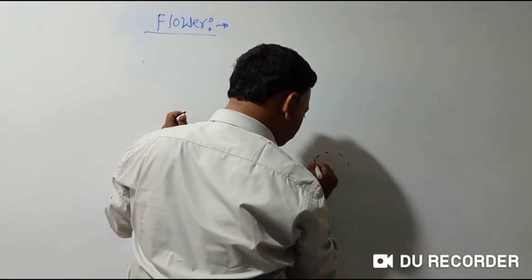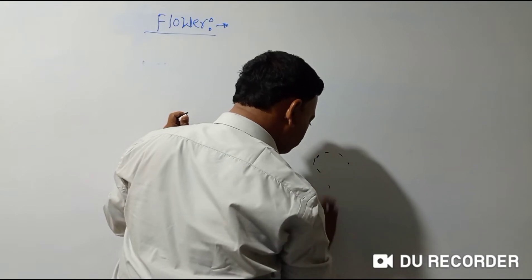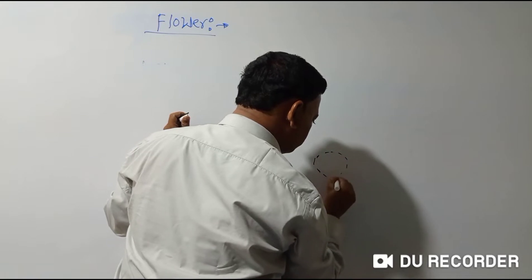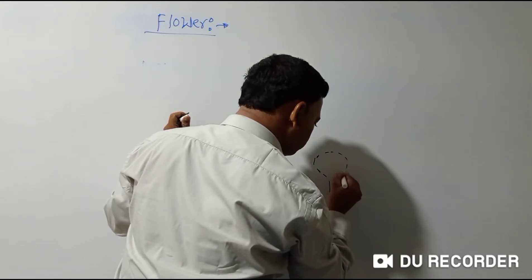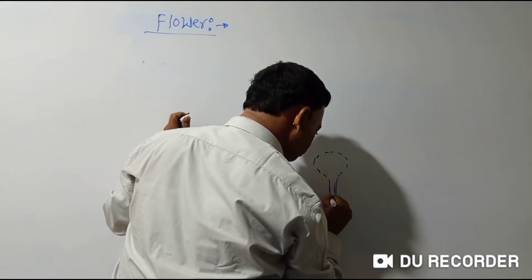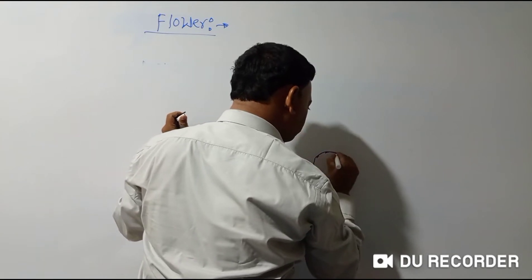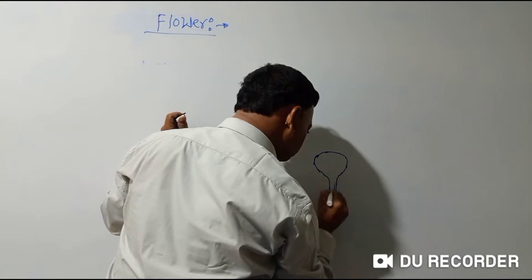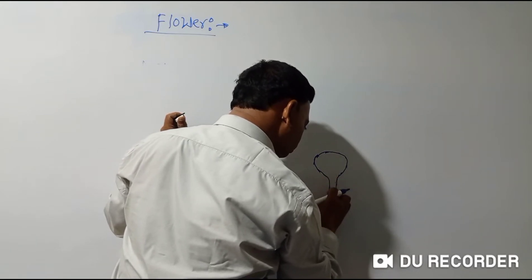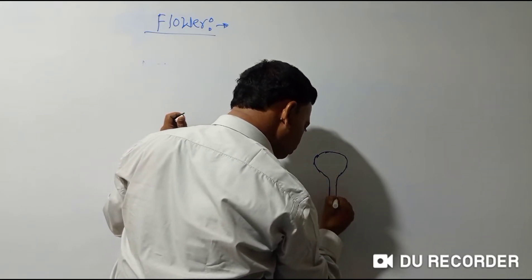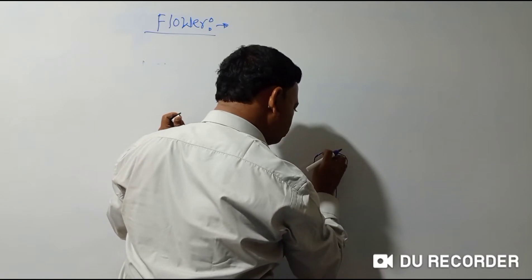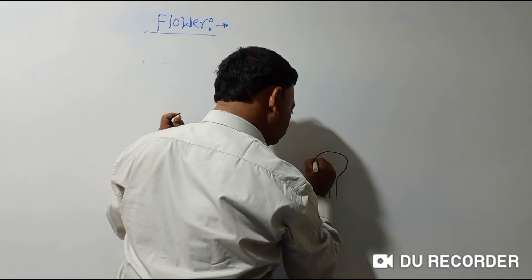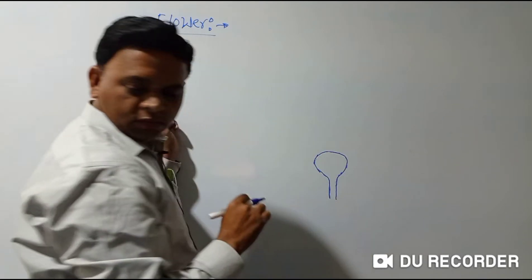This is the definition of flower. Flower is a highly modified, condensed reproductive shoot which is mainly designed for reproduction — sexual reproduction — it means pollination. We will see pollination at the end of this topic. So this is the definition of flower — very simple.